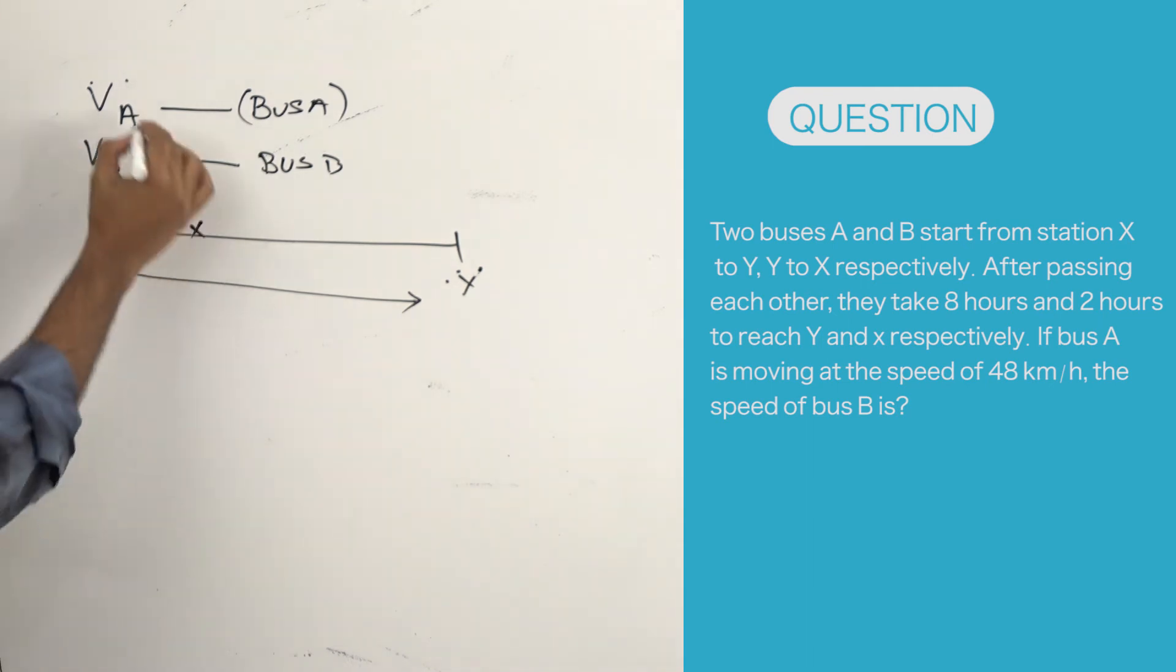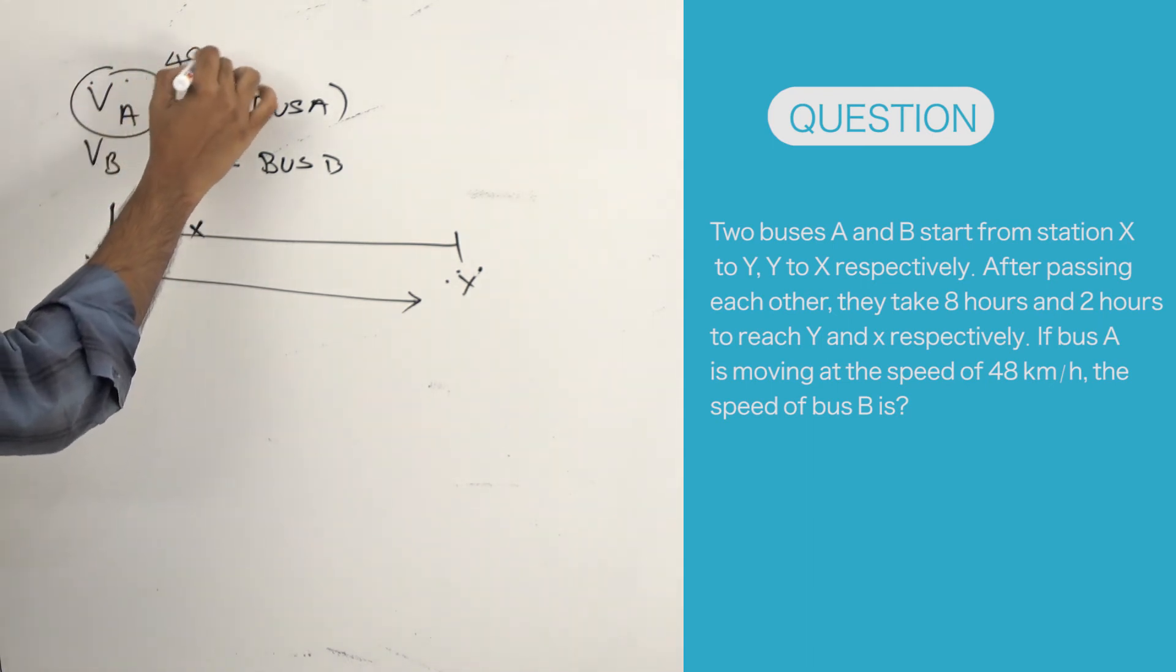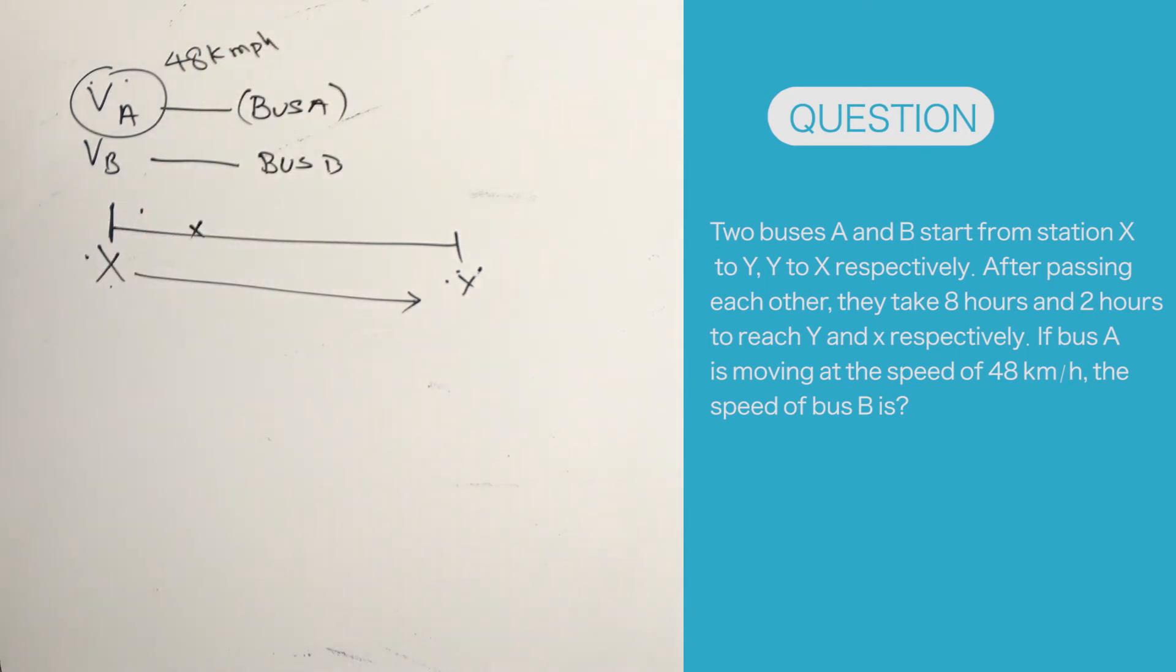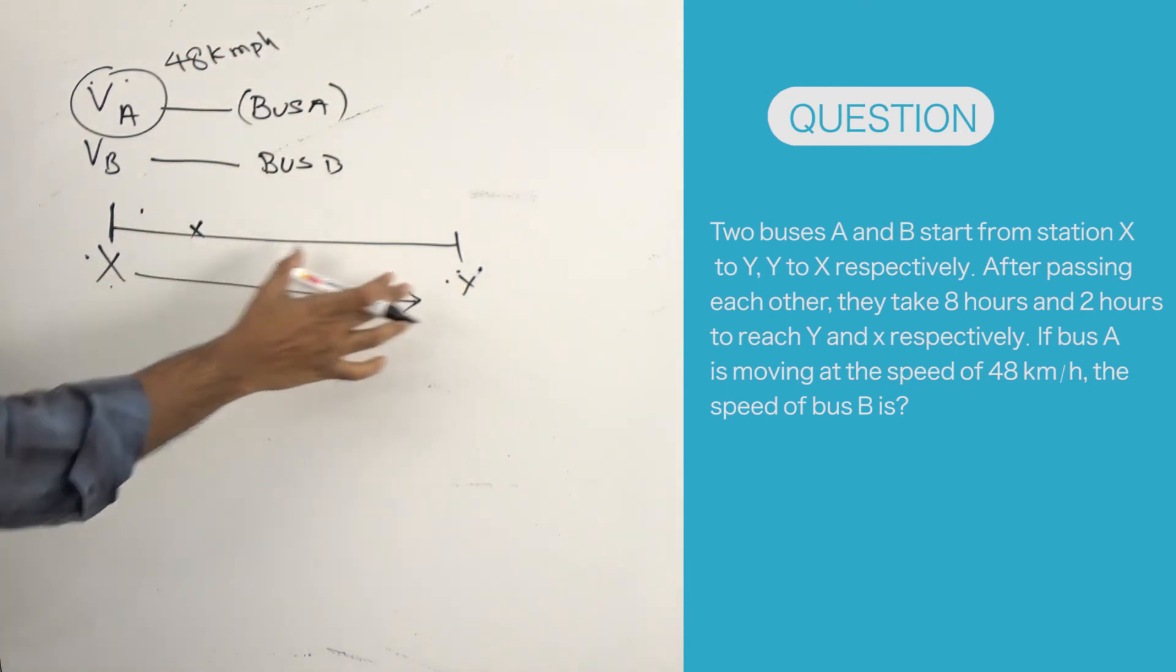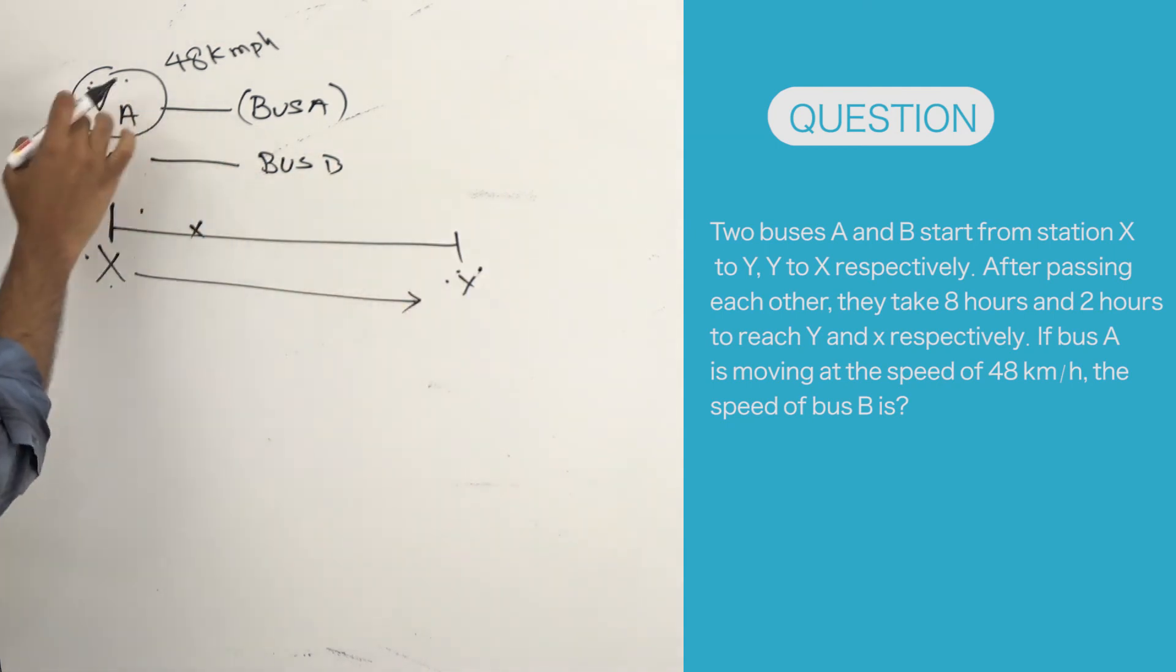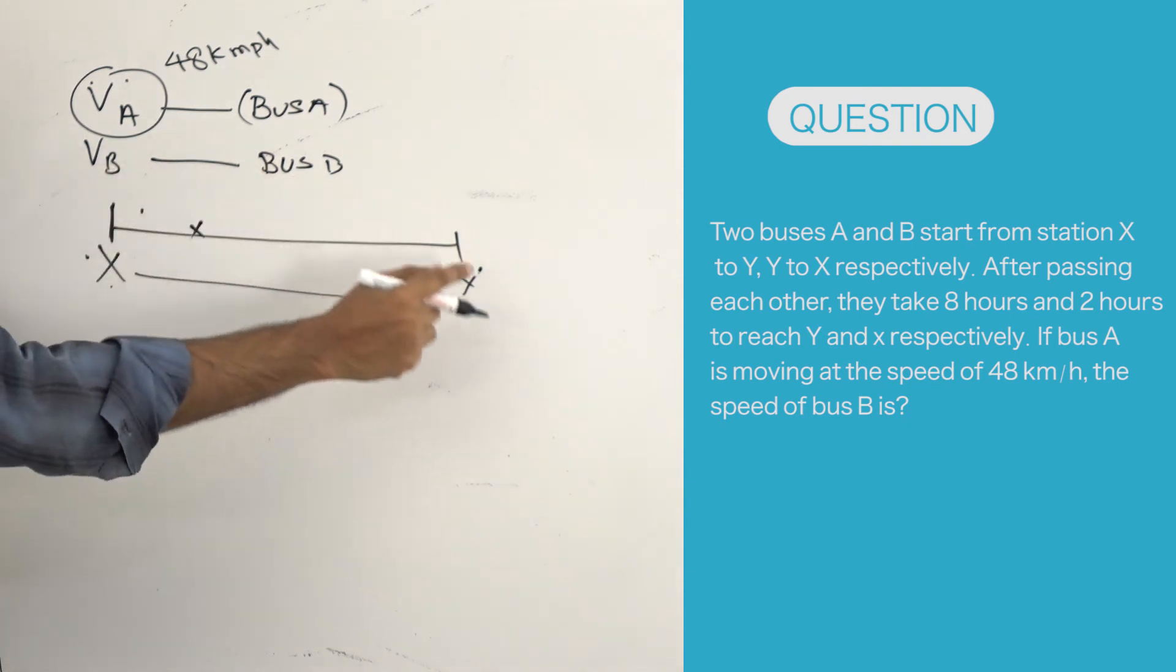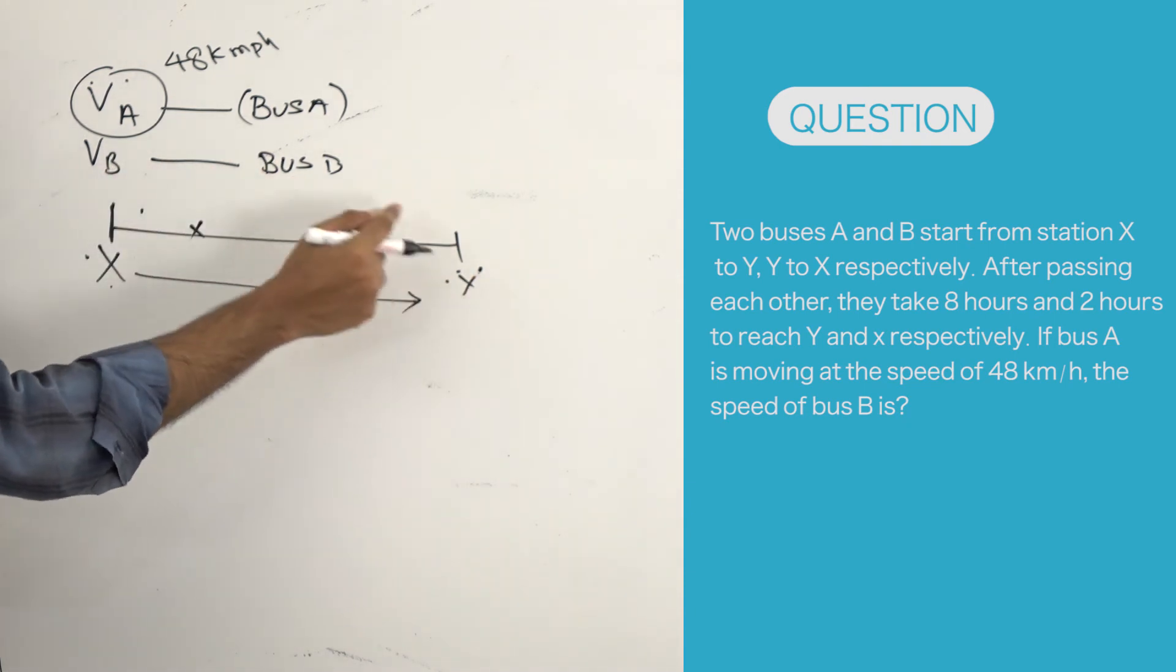The question now is: if V_A is already known as 48 kmph, what is V_B? He hasn't given the time taken to travel between X and Y. What he has given is, after crossing each other, the time taken for bus A to reach Y is 8 hours, whereas for bus B it's 2 hours.